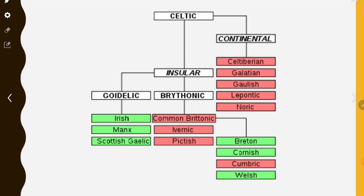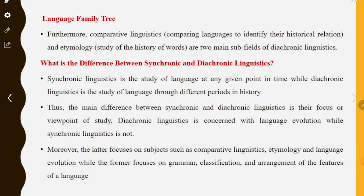The Insular branch includes Common Brittonic and Goidelic. Brythonic subdivisions include Common Brittonic, Ivernic, and Pictish. Within Brythonic: Breton, Cornish, Cumbric, and Welsh. This language family tree illustrates diachronic linguistic study.